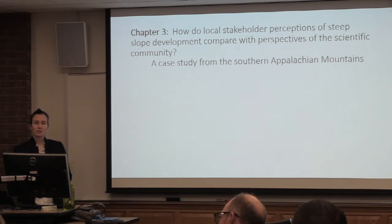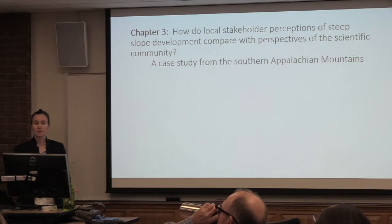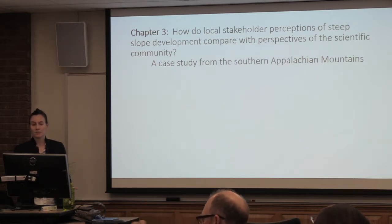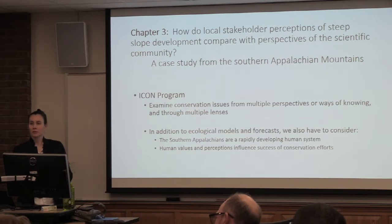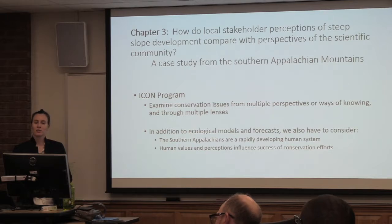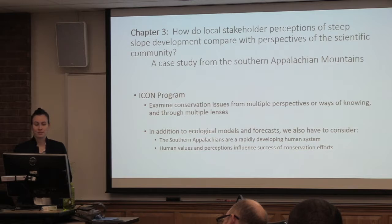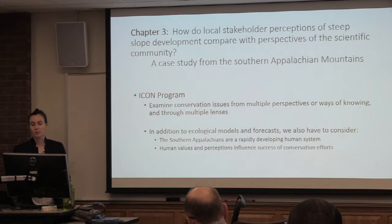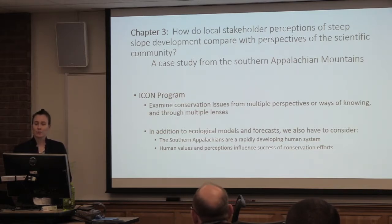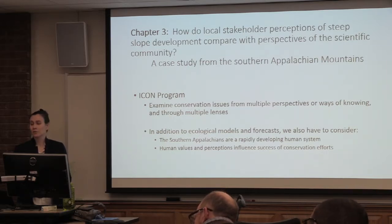So then we moved on to the next chapter: how do local stakeholder perceptions of steep slope development compare with perspectives of the scientific community in the Southern Appalachian Mountains? This might seem like a big jump from what we've been talking about. But in the ICON program, we try to look at conservation issues from multiple perspectives and through multiple lenses. In addition to the ecological models and forecasts — which are super exciting — we also need to consider that the Southern Appalachians are a rapidly developing human system, and that human values and perceptions are going to influence the success of any conservation efforts.